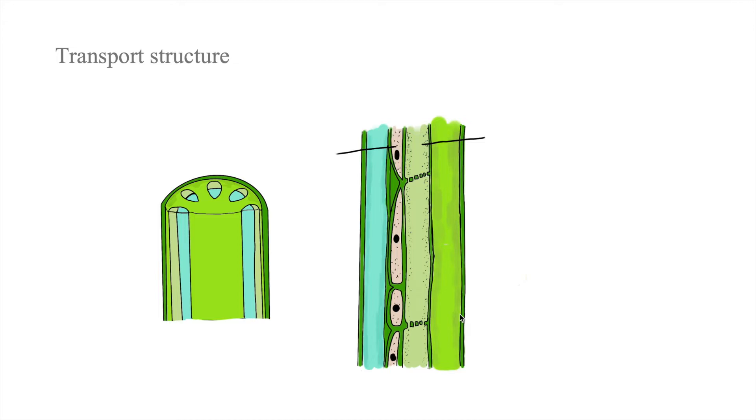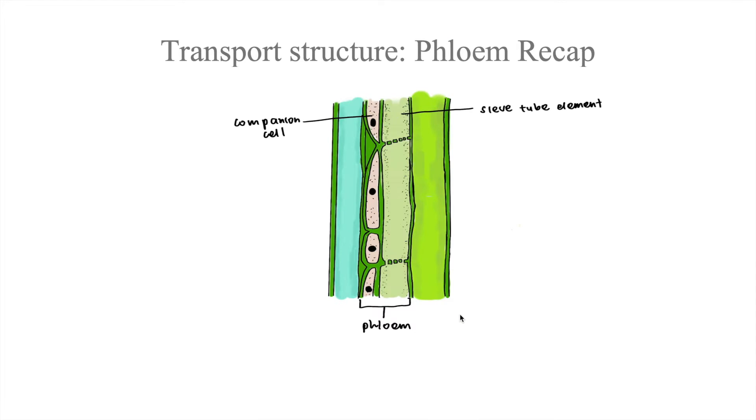Yeah, you're right. The phloem is made up of the sieve-tube element as well as the companion cell.